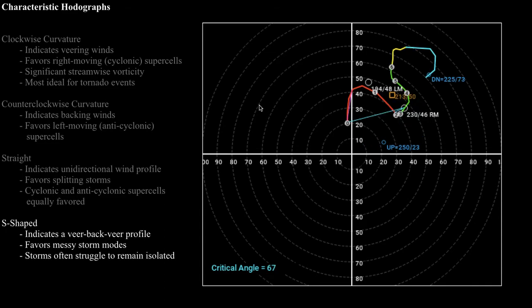An informal term I use is an S-shaped hodograph, because it kind of looks like an S — either a backwards S or a forwards S. This is something you'll typically see in an environment characterized by a layer of veering winds, then on top of that a layer of backing winds, and then on top of that a layer of veering winds again. Sometimes that's abbreviated as a veer-back-veer profile, or VBV.